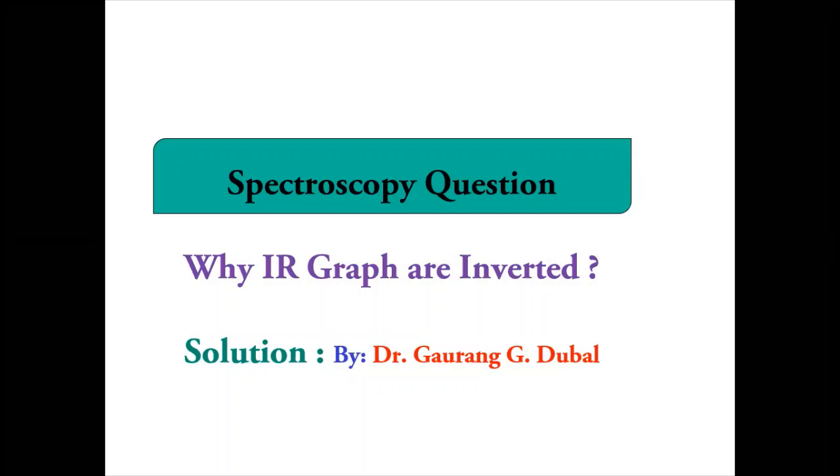Whenever we are taking NMR we can see the peaks go upward, but if we take the IR spectra, the peaks go downward. So we want the solution to this question why we are getting inverted IR graphs.